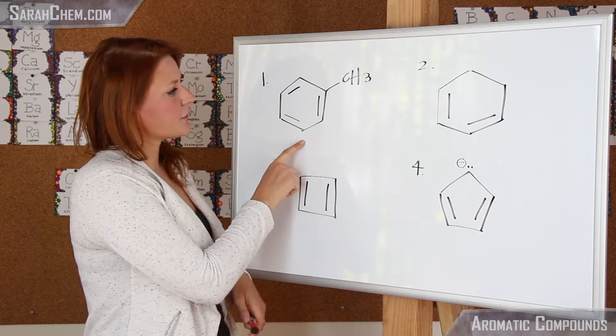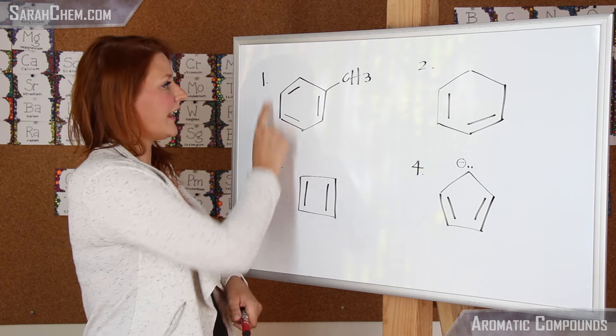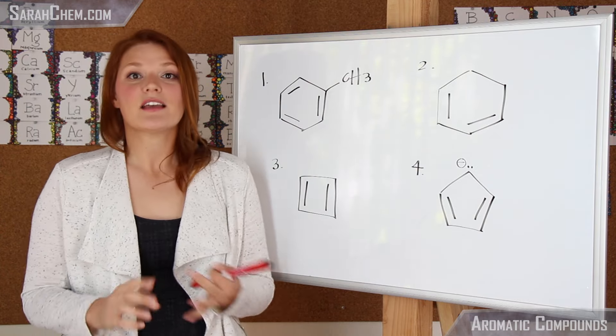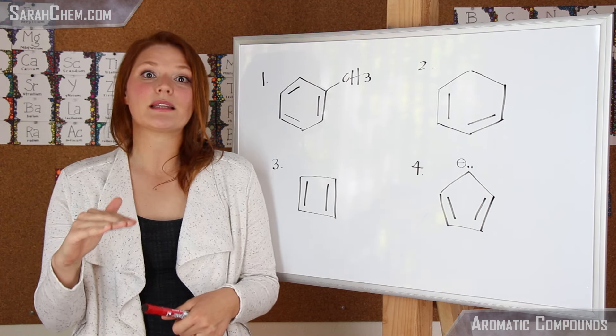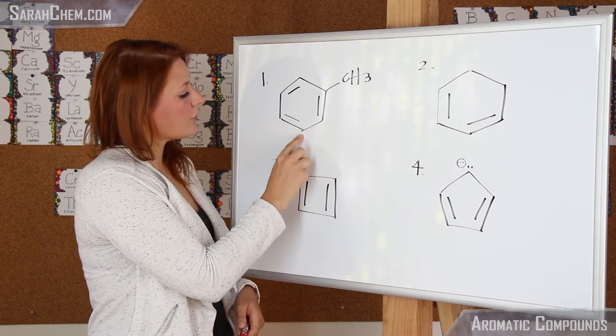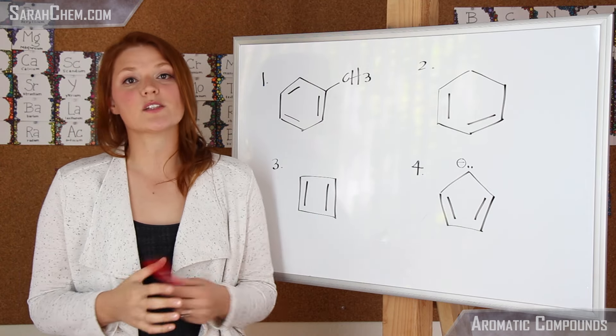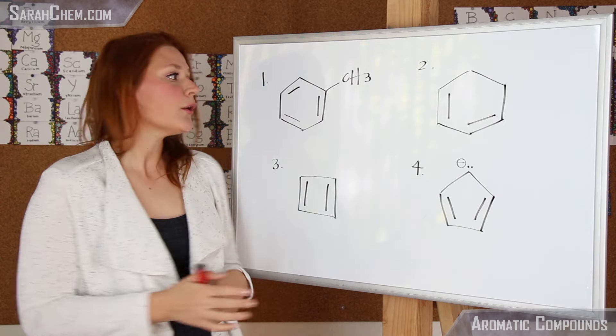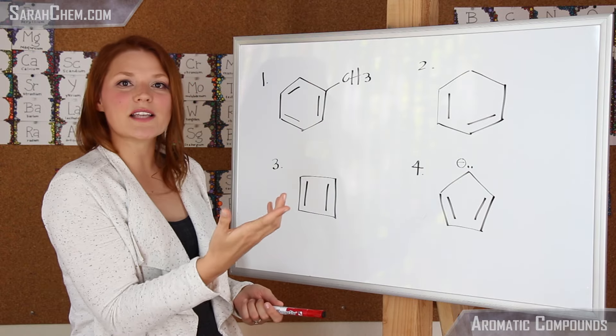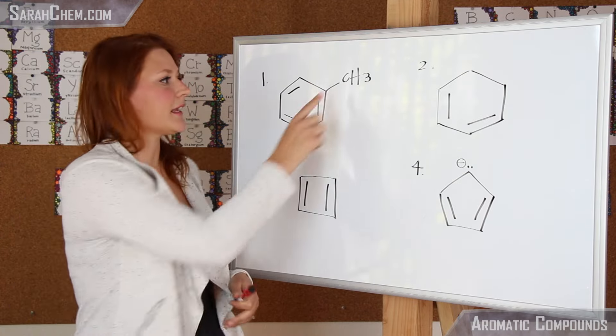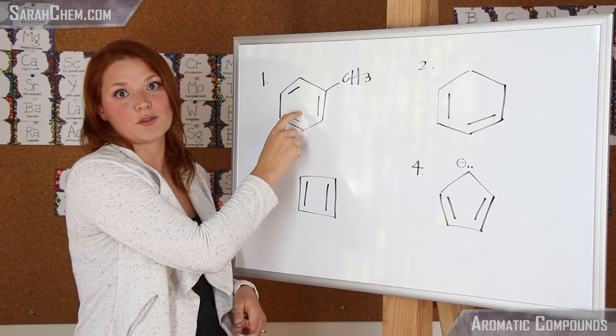If we take a look at this first compound here, we see that it meets the first criteria—it does have a cycle in it. The second criteria is that it has to be planar, and if we take a look, all of the carbons that are participating in this cycle are sp2 hybridized, which would mean they would be planar. This carbon here, even though it's sp3, doesn't impact our aromaticity because it's not directly part of this ring.